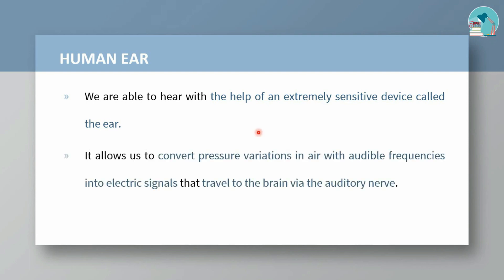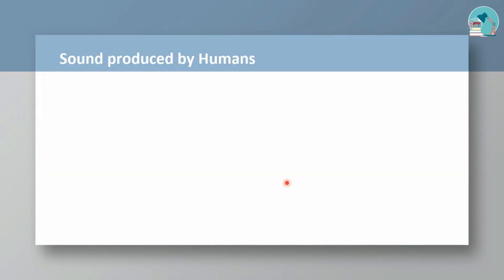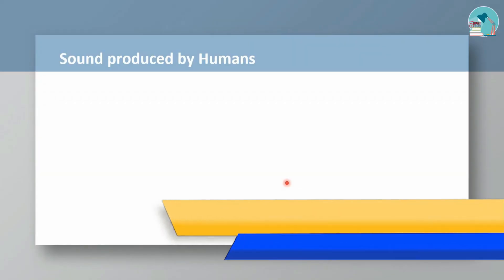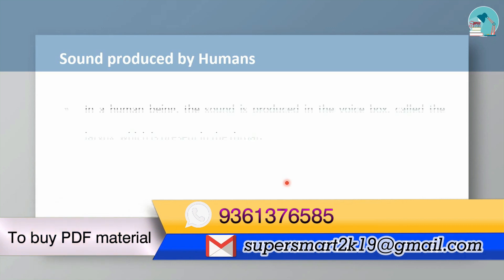What do we do? Pressure variation in air with audible frequency. Let's convert the electrical signal. We are going to show the auditory nerve.